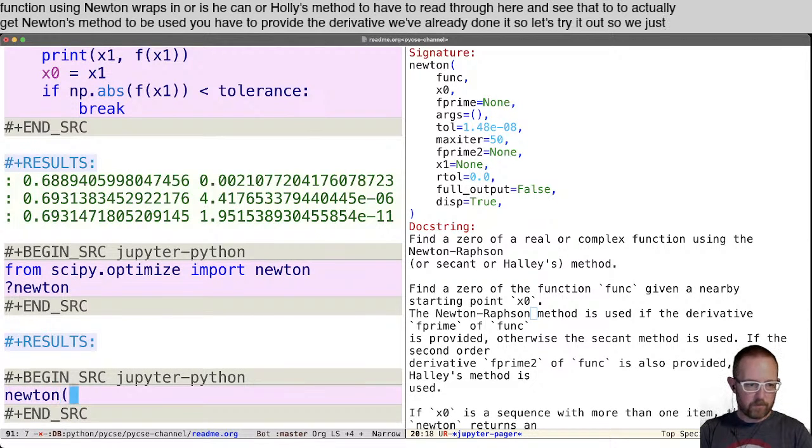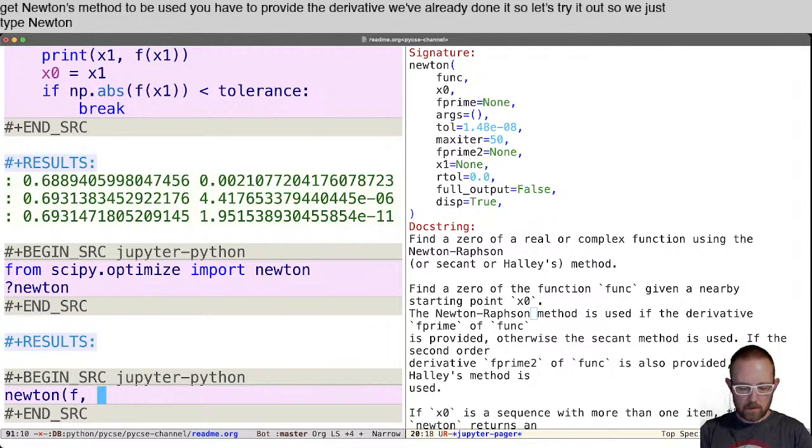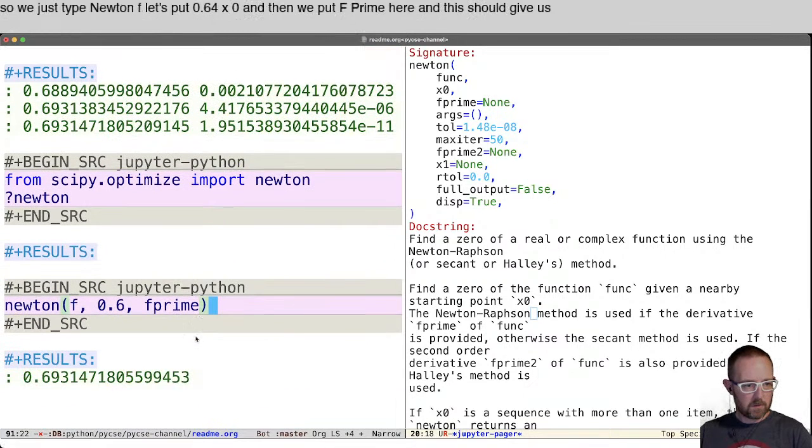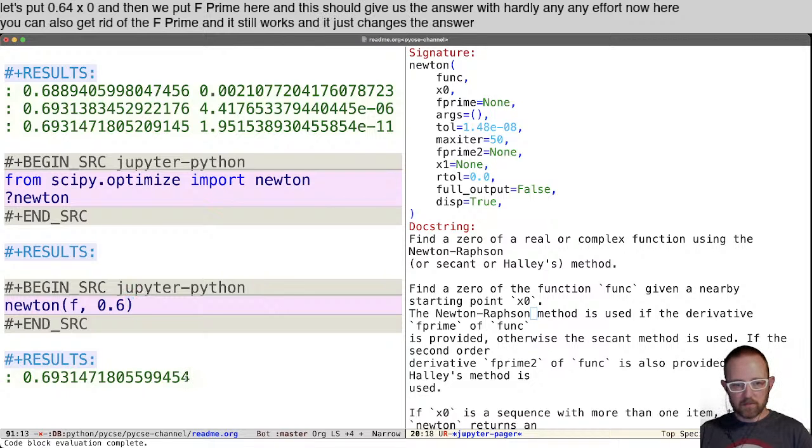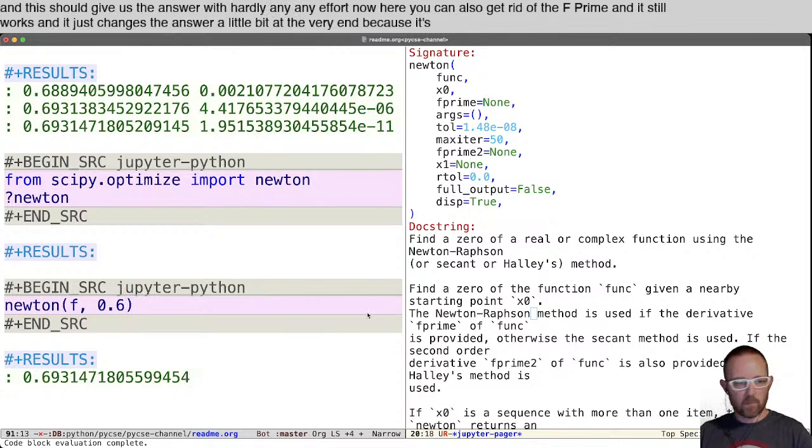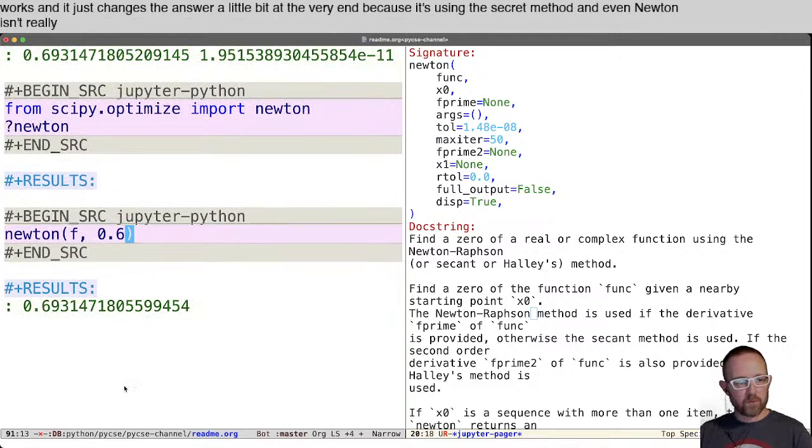So we just type Newton, f, let's put 0.6 for x0 and then we put f prime here. And this should give us the answer with hardly any effort. Now here you can also get rid of the f prime and it still works. And it just changes the answer a little bit at the very end because it's using the secant method.